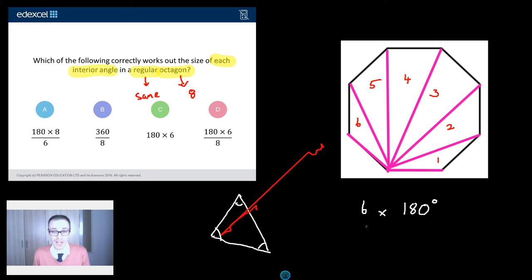So, how do I work that out? Well, there are eight angles in total. It's regular, so they're all the same. So, I've got to share that total sum by each of them. So, I reckon I'm going for six lots of 180 divided by eight, which is exactly the same as 180 times six divided by eight.